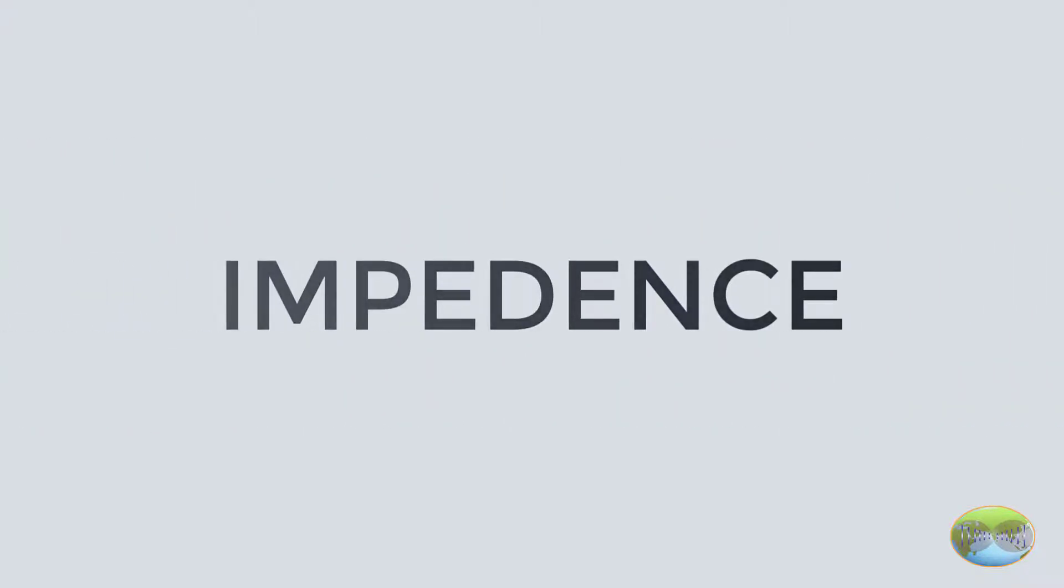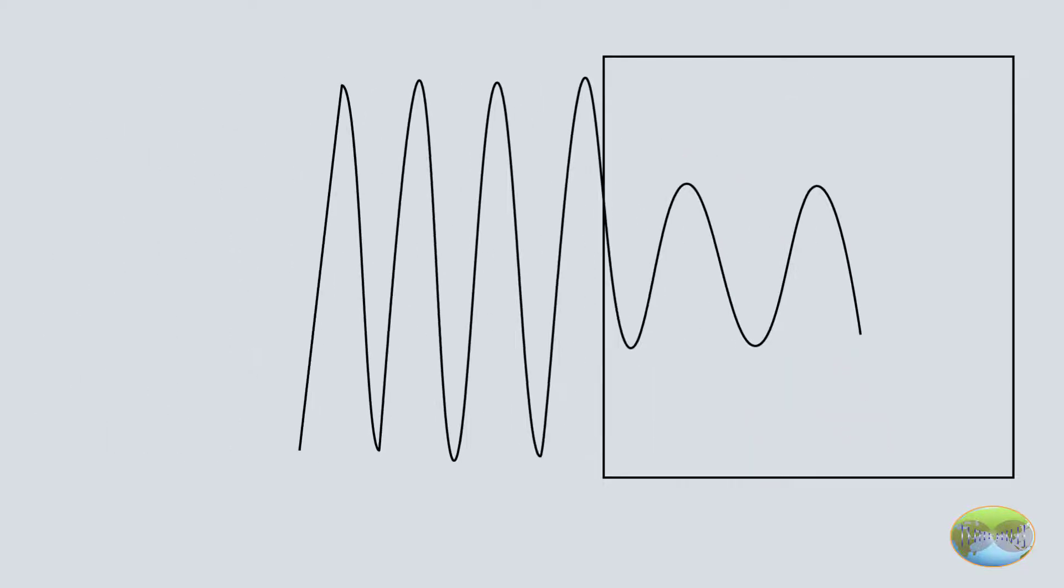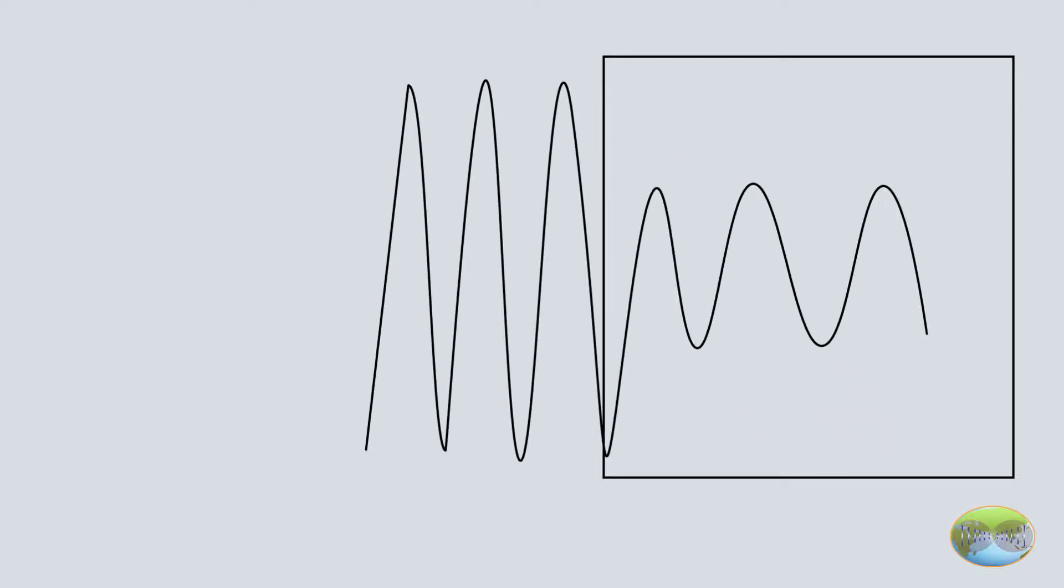In wave mechanics, there is a term called impedance, which basically means the ability to oppose the traveling wave through it, or in other words, how much damping it can induce to the wave.